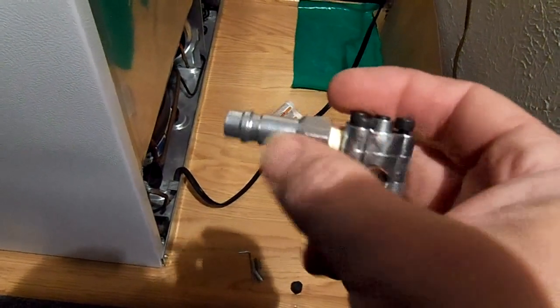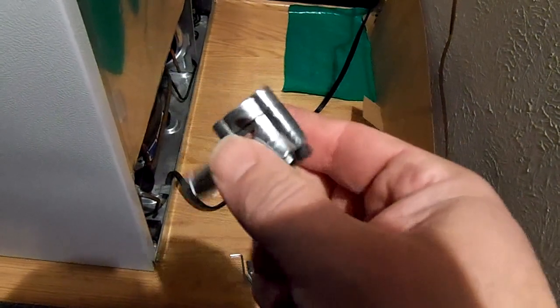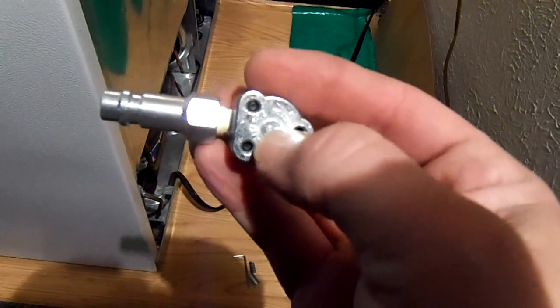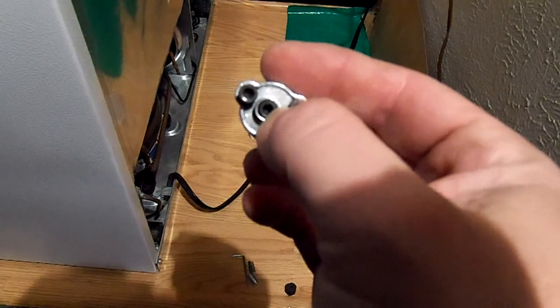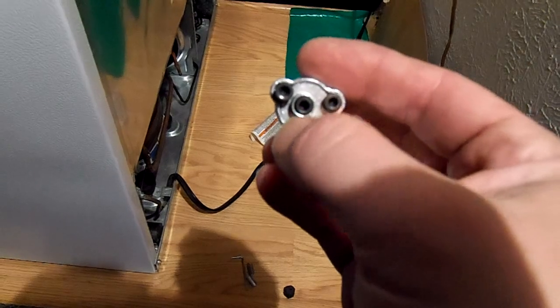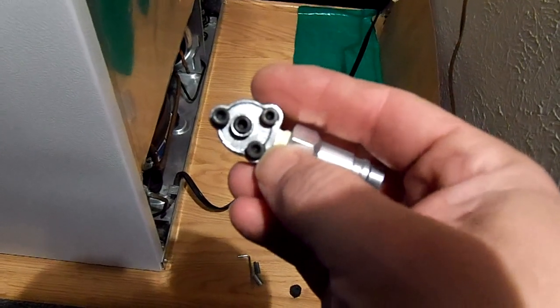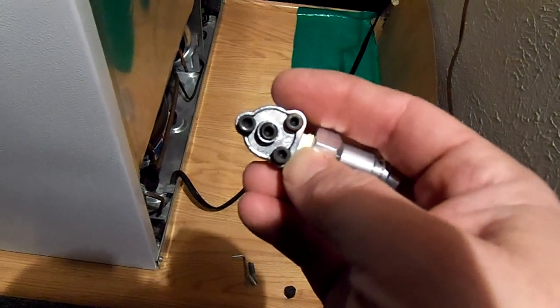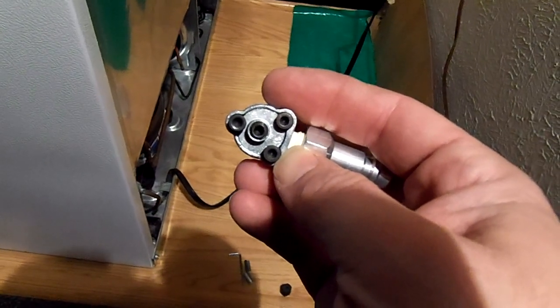The way this valve works is you get a tight fit over the pipe, then you pierce it with the center Allen key. You tighten it all the way down until it stops, which pierces the tube. Then you back it off two full turns to be fully open. To close it again, you tighten it all the way down.